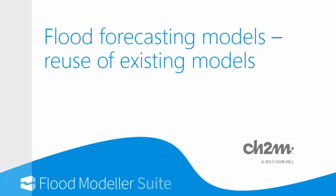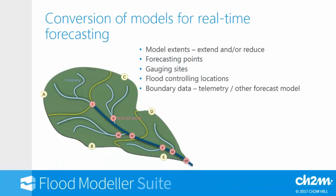Conversion of existing models for use in flood forecasting - there are a lot of existing models out there. The first thing to consider is the extents of our model: do we need to reduce or extend them to cover the areas we're interested in? We need to know where our forecasting points are. Our gauging sites are useful not only in evaluating forecast quality but in providing inputs. We need to concentrate on the mechanisms controlling floods and water levels - there may be critical structures or cross sections controlling water surface elevations.